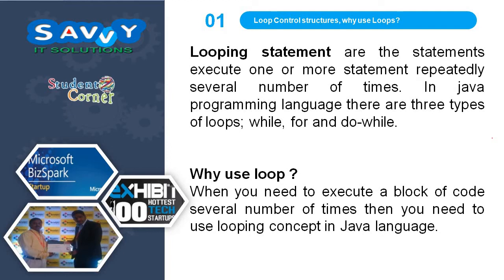Now, loop control structures — why use loops? Looping statements are statements that execute one or more statements repeatedly several number of times. In Java programming language there are three types of loops: while, for, and do-while. You need to use the looping concept in Java when you need to execute a block of code several number of times.